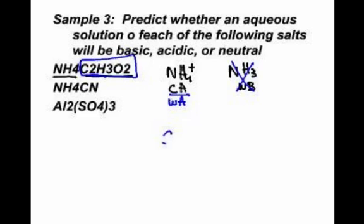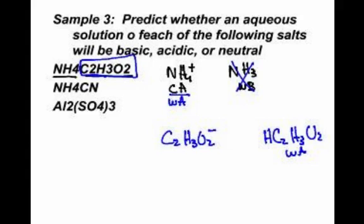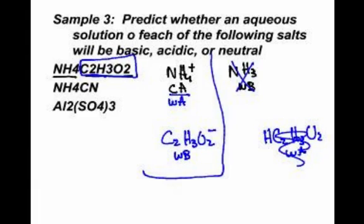So acetate C2H3O2 negative, whose partner is acetic acid, a weak acid, makes acetate a conjugate base and weak base. We have a weak base and a weak acid mixed together. Who wins? The one with the bigger K, so we must look at the K values.